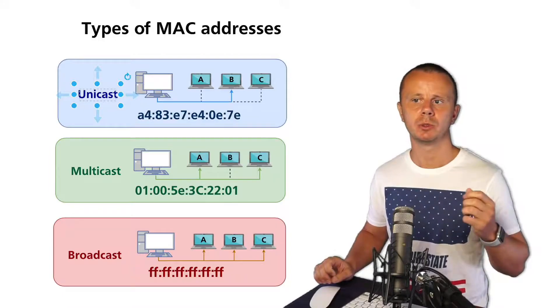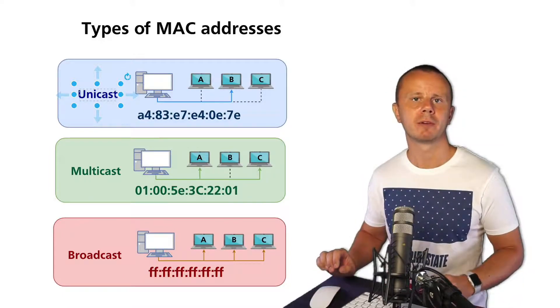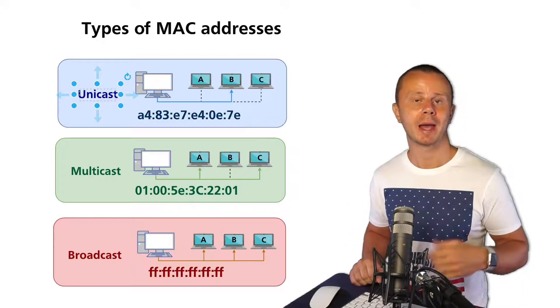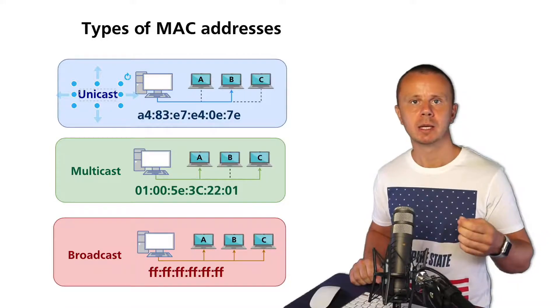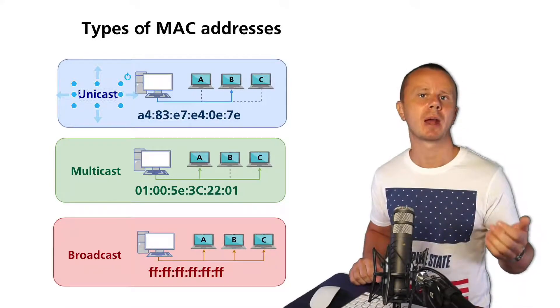Getting back to the example when I explained how a switch fills its MAC address table, it actually adds unicast MAC addresses and maps them to specific ports when it receives frames from different ports.